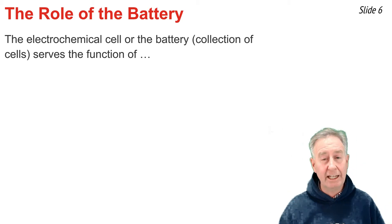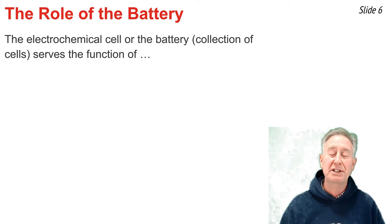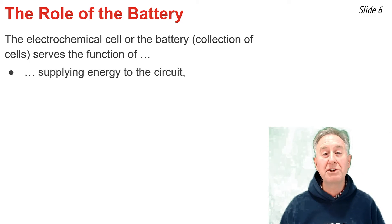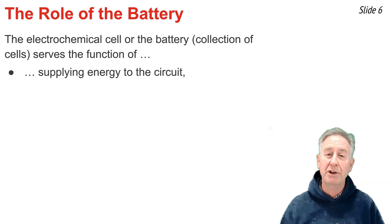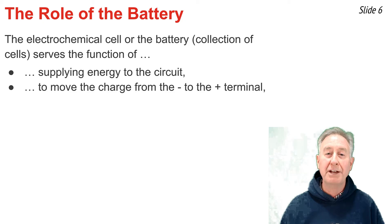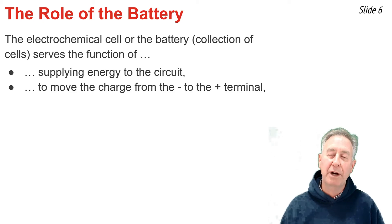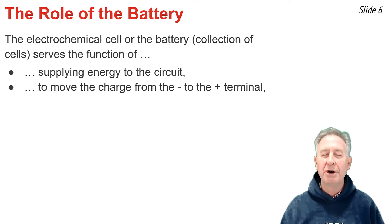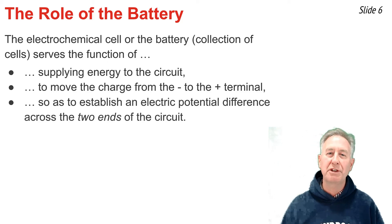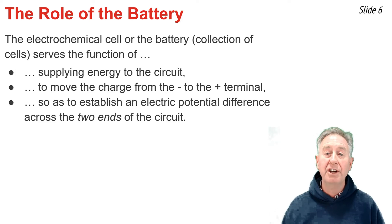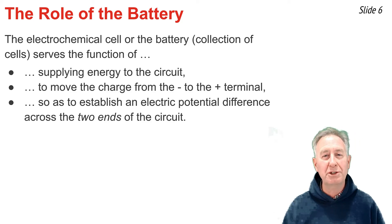Let's discuss why we need a battery in physics circuits. What the battery does is supply the energy the circuit requires. The circuit requires energy because there must be a way to move the positive charge from the low-potential-energy location to the high-potential-energy location — we have to move the charge uphill, and energy is required to do work on the charge to cause that motion. Once moved uphill, it establishes an electric potential difference across the two ends of the circuit, which is impressed across the wires and light bulbs attached to the positive and negative terminals.